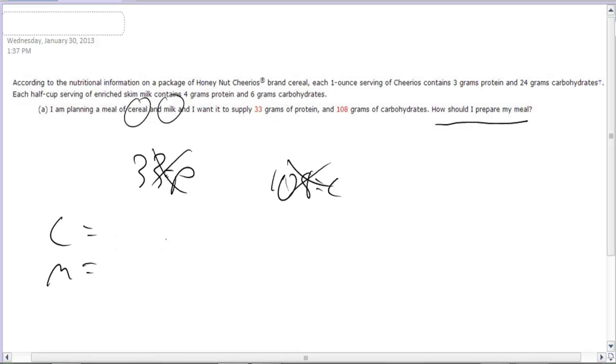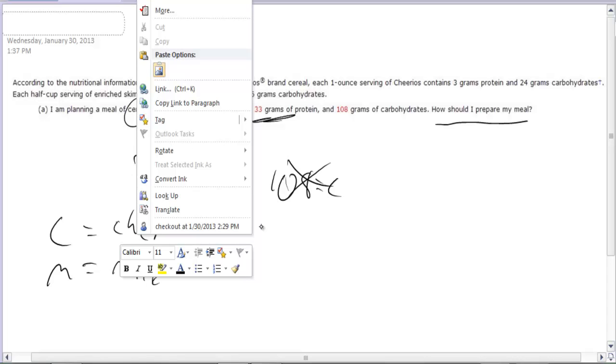All right, so now, how are we going to put that together? The easiest way to think about this is saying if these are our variables, we need to create equations that have something to do with the amount of Cheerios and the amount of milk. So the first thing we need to do is - I know I need a total of 33 grams of protein, so I'm going to make a protein equation.